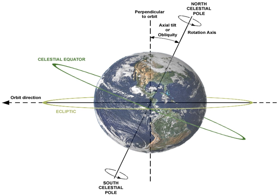It differs from orbital inclination. At an obliquity of zero degrees, the two axes point in the same direction, i.e., the rotational axis is perpendicular to the orbital plane.